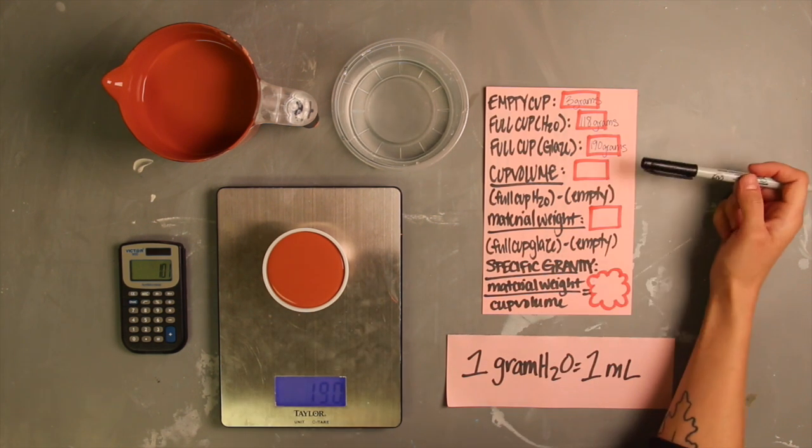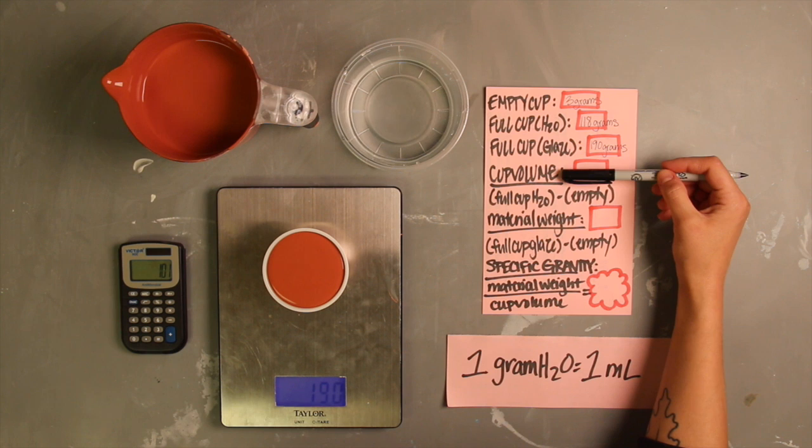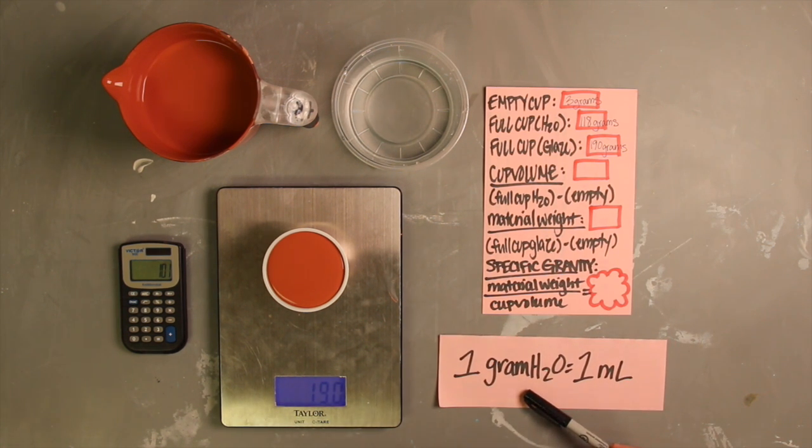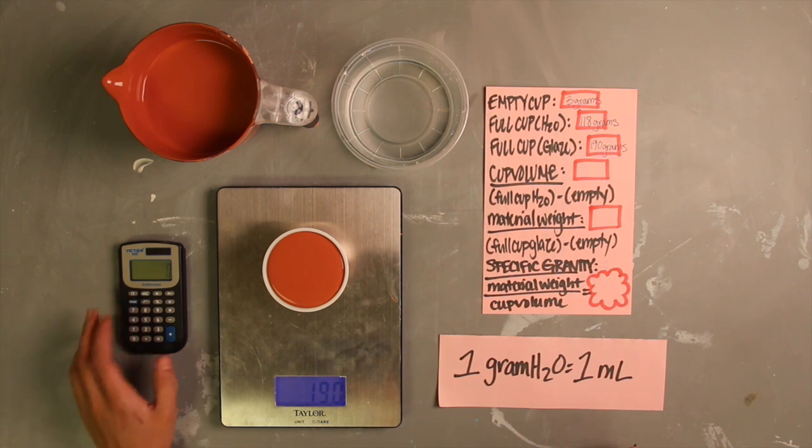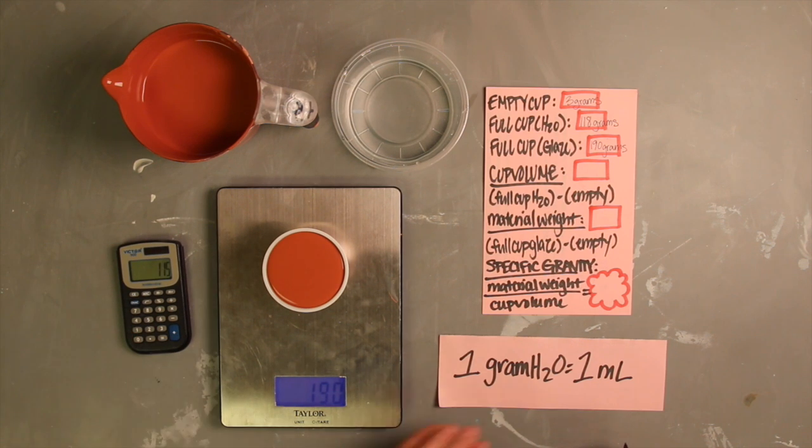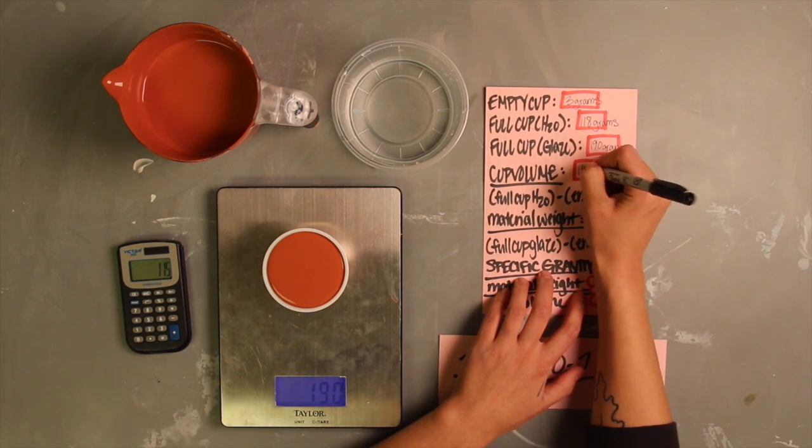So to find the volume that you've been pouring, grab your calculator and subtract the cup weight from your water measurement. Since 1 gram of water is 1 milliliter, my cup volume is going to be 115 milliliters. Take a note of this.